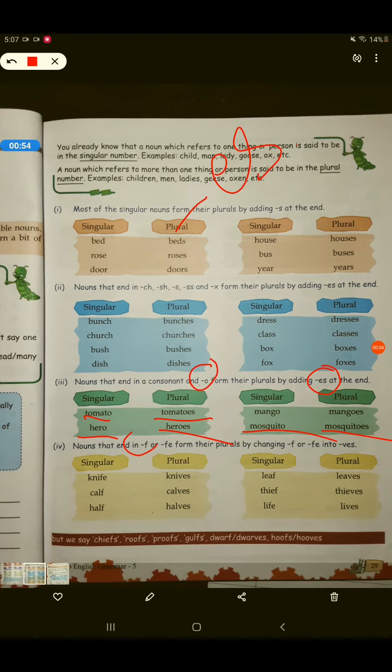and जिसमें F होता है, या FE होता है, उसमें हम F या FE को हटा देते हैं, और हम VES लगाते हैं. Okay, for example, knife, K-N-I-F-E, K-N-I-V-E-S, knives. Next one is, calf, calves. Alright, next one is, half, halves. Leaf, leaves, thief, thieves, life, and lives.